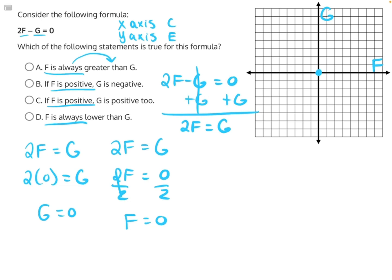Answer choice A says F is always greater than G, which is incorrect because here there's one instance where they are both exactly the same. And same thing with answer choice D. F is always lower than G. That's not true because there's one instance where they are exactly the same.